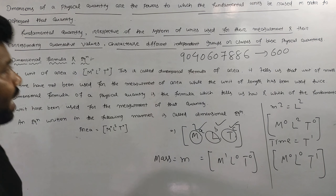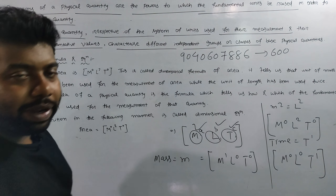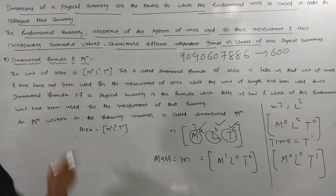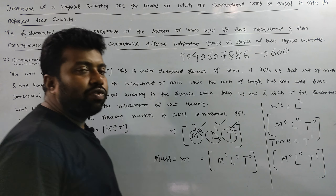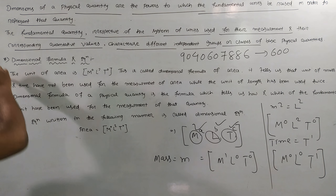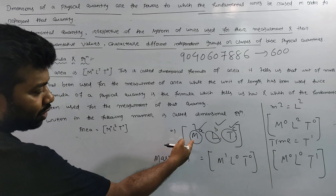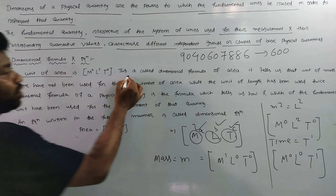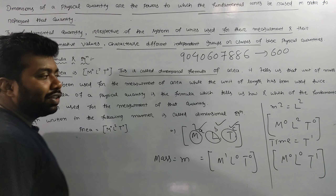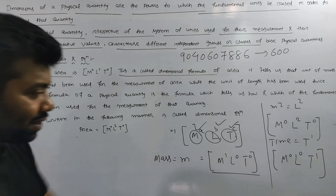The fundamental quantities are mass, length, and time. Irrespective of the system used for their measurement and their corresponding quantity values, their characteristics define different independent groups of basic physical quantities. The area is called M⁰L²T⁰. This is called the dimensional formula of area.